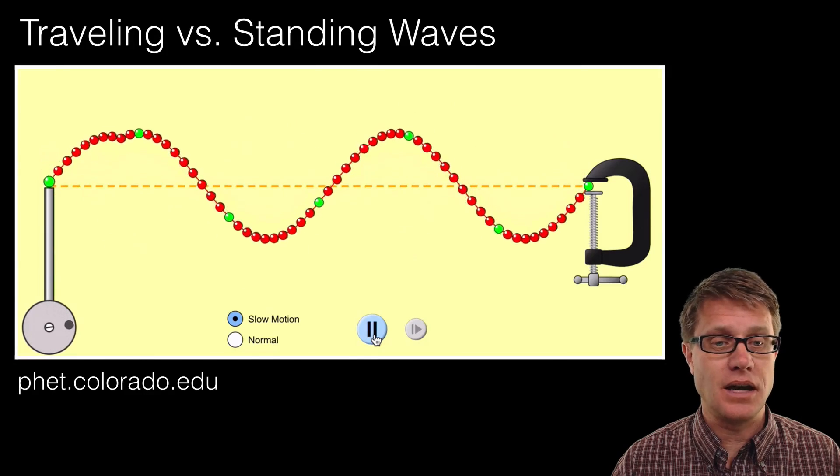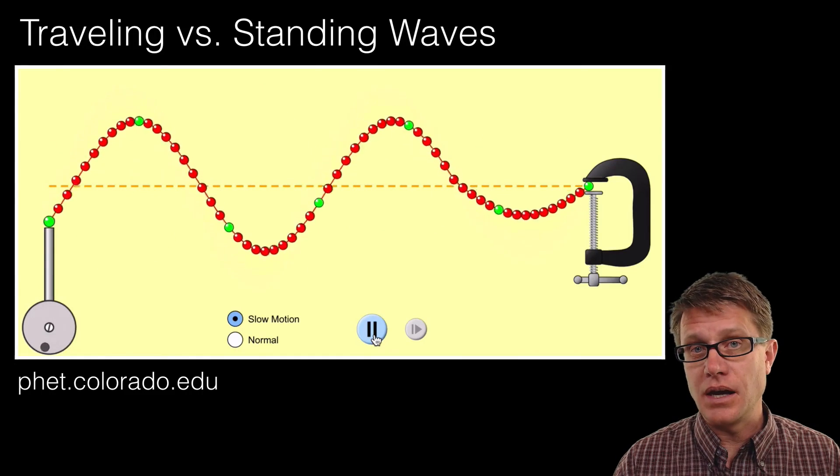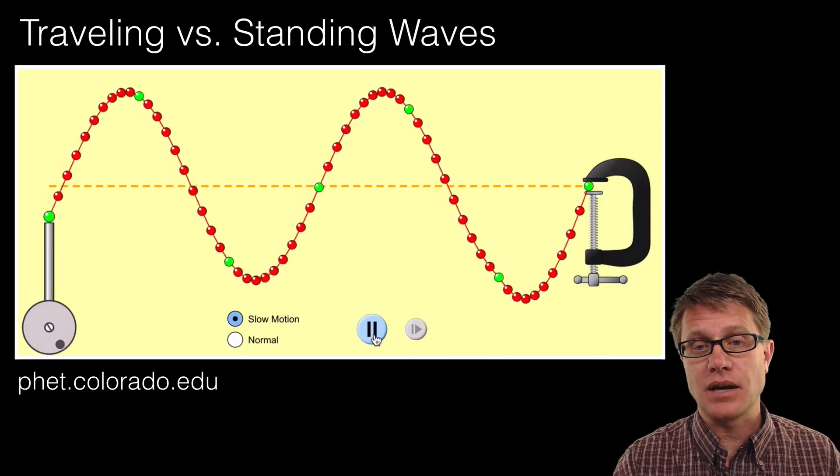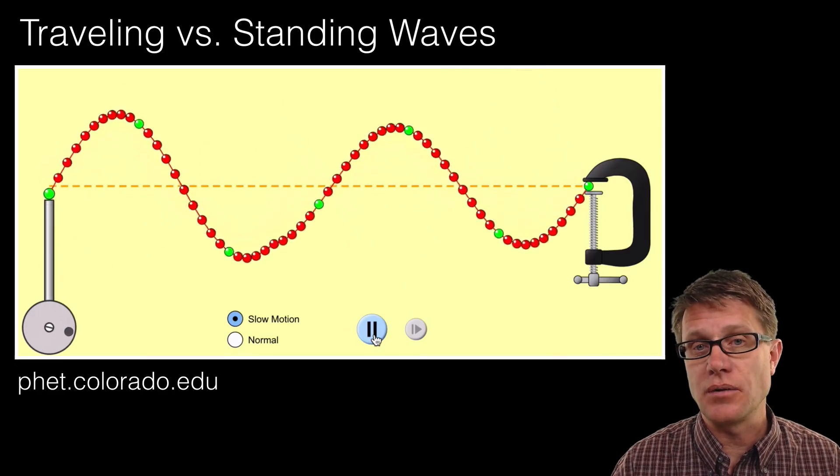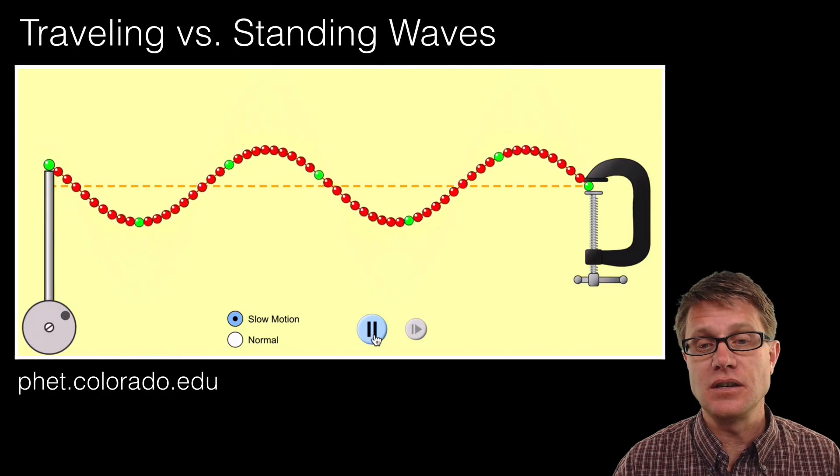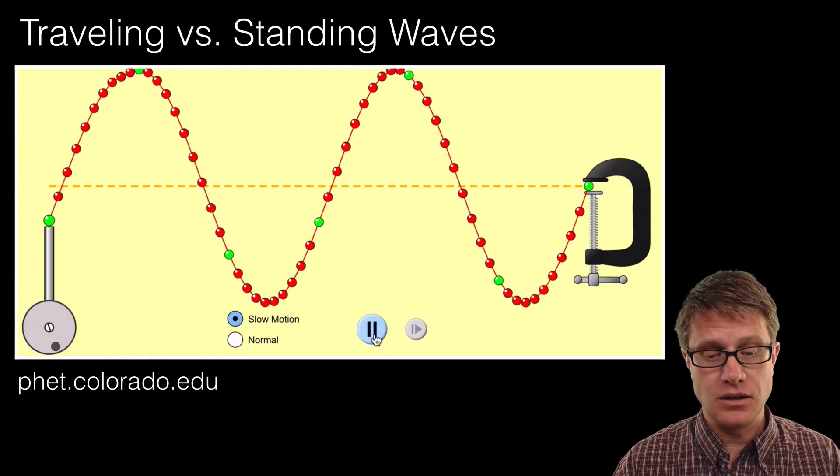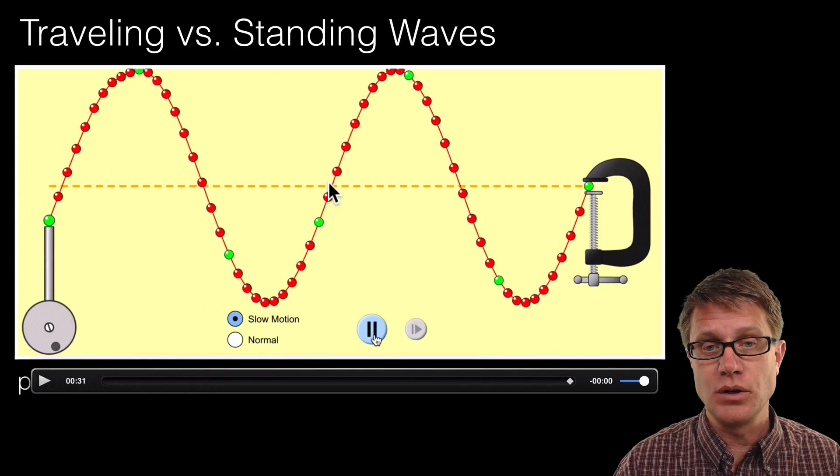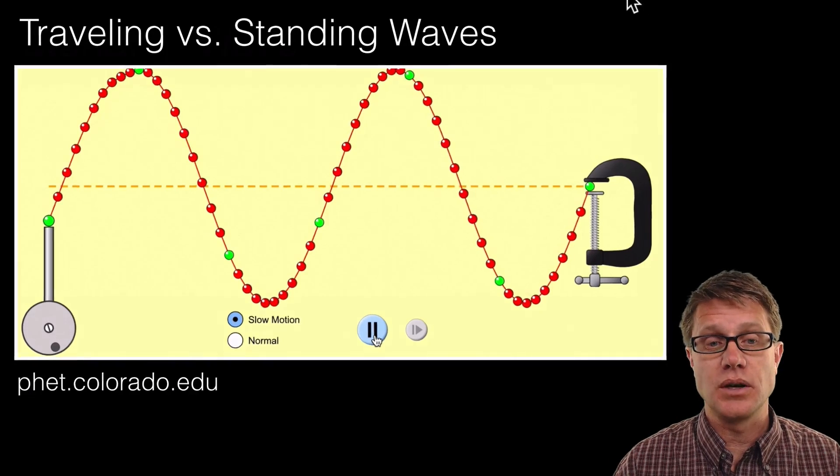And now they are going to bounce back again. And as that wave goes back and forth and back and forth you can see that we are starting to generate these standing waves. And you can even see those nodes and those anti-nodes. In other words those areas where it is not moving and those areas where it is moving quite a bit.